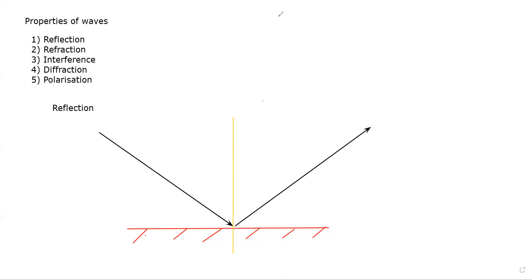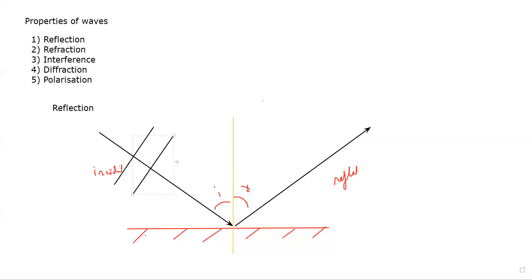According to the law of reflection, the angle between the incident ray and the normal will be equal to the angle between the normal and the reflected ray. If you draw the wave fronts — wave fronts represent identical points of the wave — the only thing which changes during a reflection is the direction of the wave.